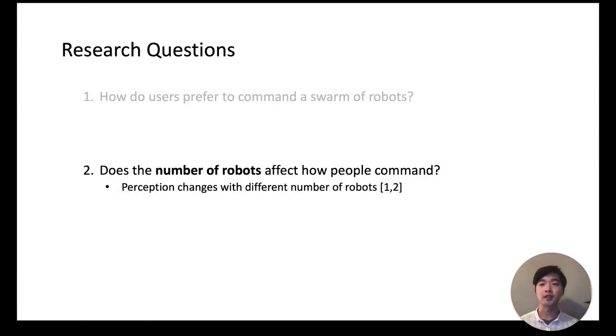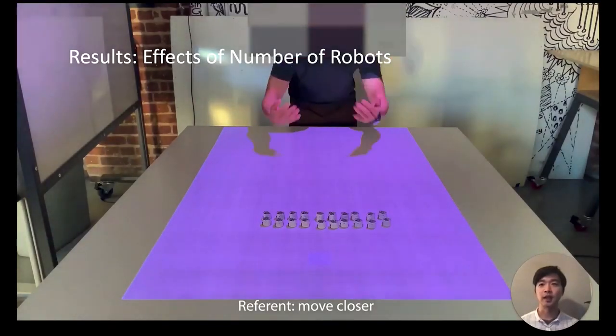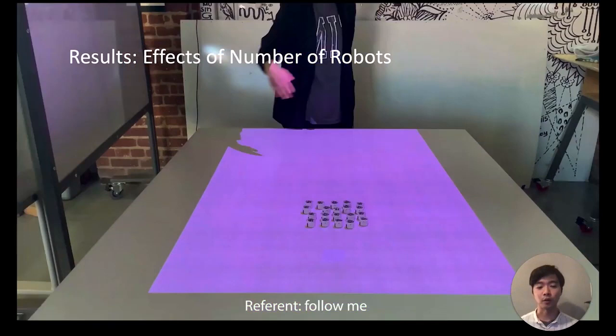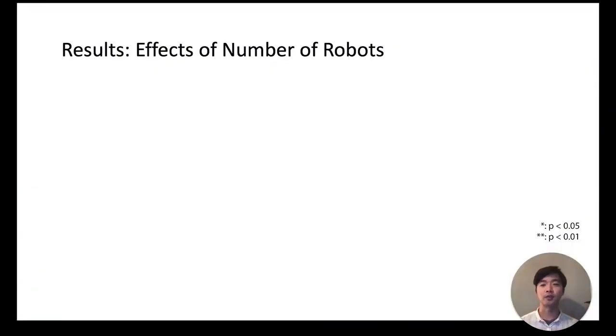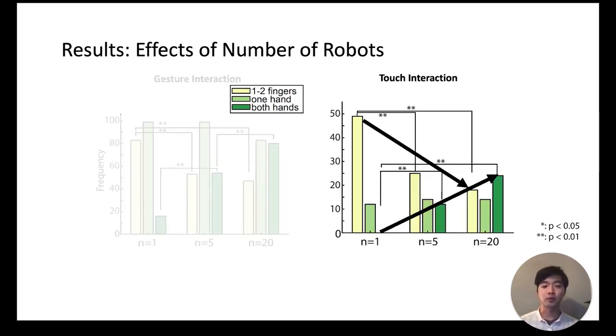The second question we had was on the number of robots and its effect. We did observe significant effects and that for similar tasks, participants used different number of hands based on how many robots they interact with. This effect was significant for both gesture as well as touch interactions. For gesture we saw an increase in two-handed gesture when there were more robots and decrease in use of one or two fingers. Similar trends were observed for touch interaction as well. Just to clarify, one or two finger gesture or touch interaction refer to instances where users either point with their finger or grab a robot with two fingers, and these types of interaction occurred abundantly and thus we labeled them in a separate category than one-handed interaction.